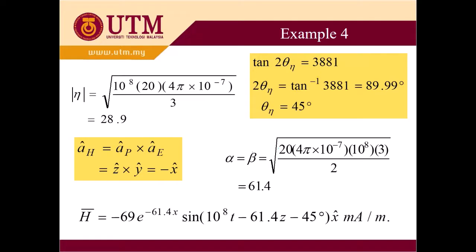How to calculate the intrinsic impedance. The magnitude equal to square root of omega mu divided by sigma. Equal to 28.9.